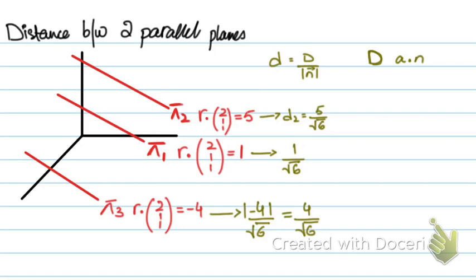Now, say you had to find this distance, the distance between the first plane and the third plane. So, 1 over root 6 is basically this distance, right?